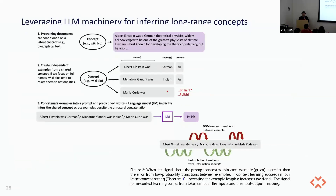A simple illustration: given examples like 'Albert Einstein was German, Gandhi was Indian, Marie Curie was —' the system answers correctly. The idea is that the pre-training data contains a lot of Wikipedia-style biographical text, so there may be a latent variable corresponding to that document type. In that context, seeing nationality provided after a name makes it natural for the LLM to pick out the correct answer. This is a nice explanation for what could be going on.